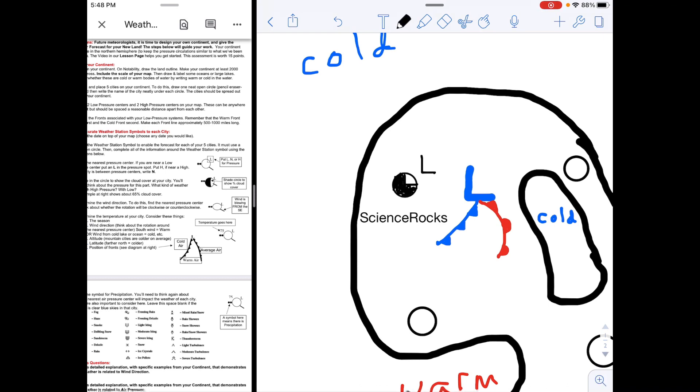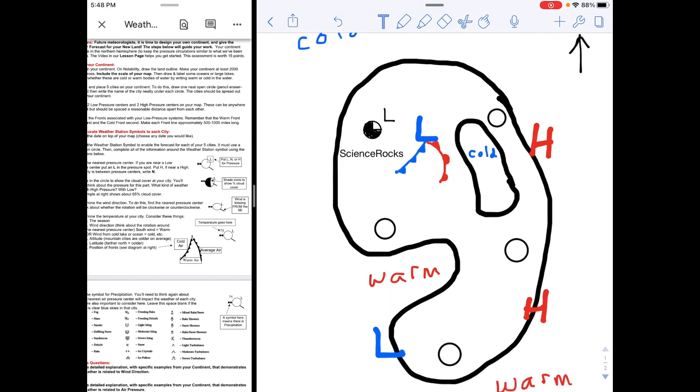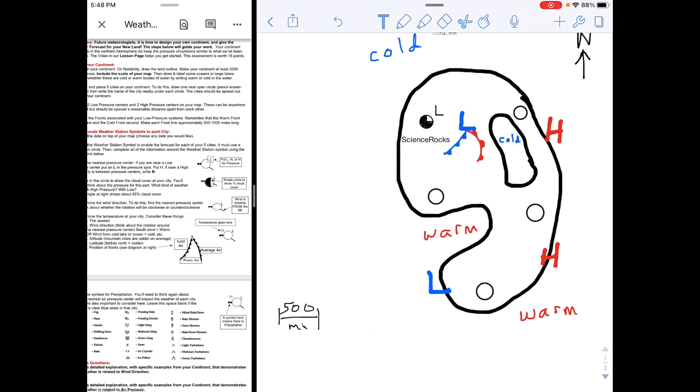Then you're ready to do the wind direction, and you need to use the pressure centers to do that. So let's take a look at the whole continent, which way the wind is going to be going from high to low. If I were to just draw in just a unique color that I will erase here, around a low pressure system the winds circulate counterclockwise, and around a high they circulate clockwise.